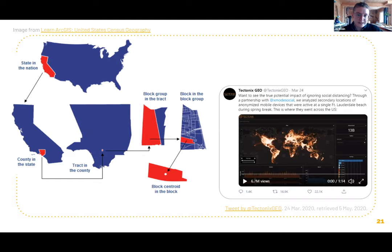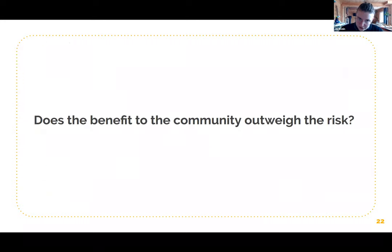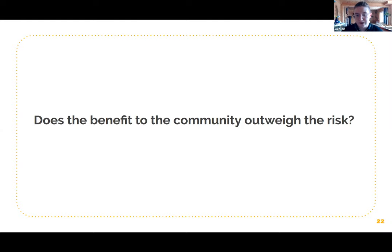This level of geographic detail isn't as relevant for typical library work, but it's still something to keep in mind for privacy: we want to keep our patrons' locations and what they're checking out private, and that should be reflected in both the data you collect and the data you share in visualizations. The final question to leave with is: does the benefit to the community outweigh the risk? The goal is to make people aware of free or helpful programming, but if it introduces risk to that same community, it might not be a great use of that data and visualization.